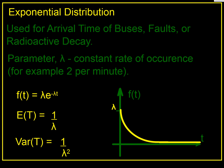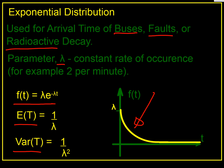So there we have the exponential distribution, which we use for arrival times of events such as buses arriving, faults occurring, or radioactive decay taking place. It uses the same constant rate of occurrence parameter lambda as the Poisson distribution, with the same assumptions of constant rate and independent events. Our results are: PDF equals lambda e to the minus lambda t, expected value equals one over lambda, and variance equals one over lambda squared.